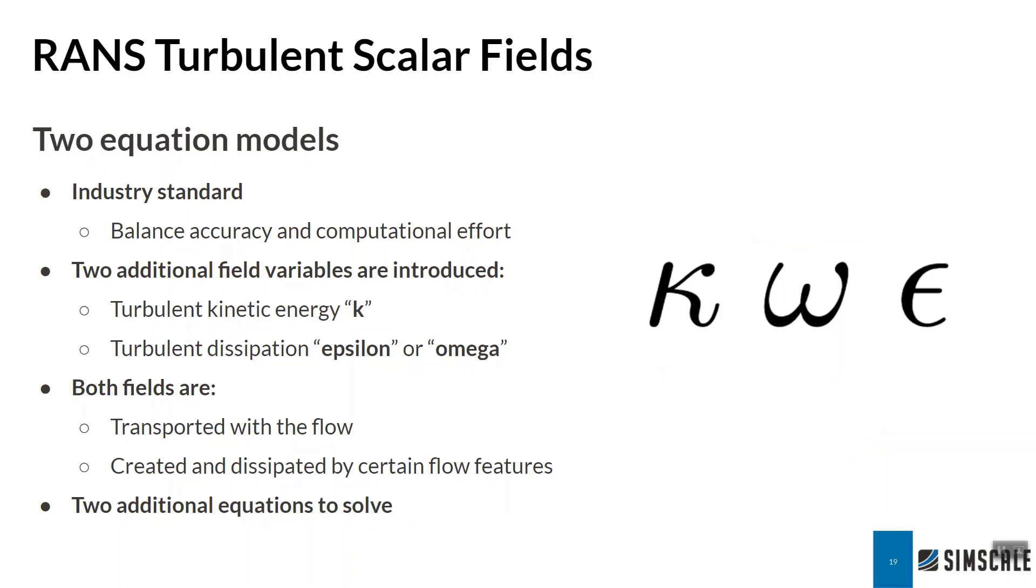So what are the different properties that we observe with the RANS turbulent model? As I mentioned, we track typically two scalar fields. These are mentioned as two equation models, so we track our turbulent kinetic energy k, which is a measure of how chaotic the flow is at any point, and our turbulent destruction, which is either epsilon or omega, and this is basically just the rate at which k is being destroyed. So both these fields are transported with the flow, and they are created and dissipated by certain flow features, namely any shear stresses that we observe. This means that we have to add two additional equations into our overall solution to solve.